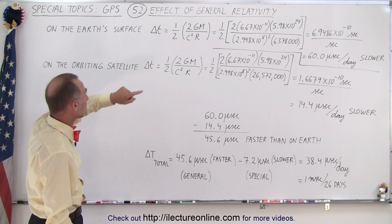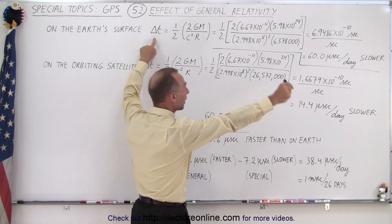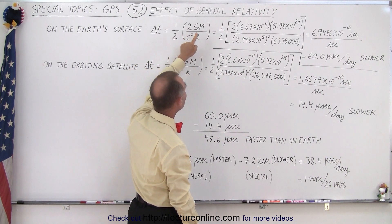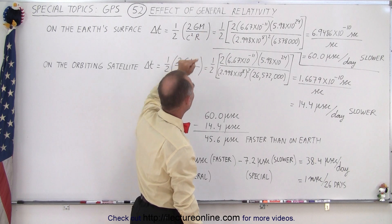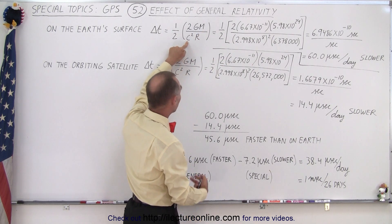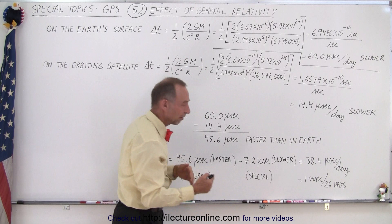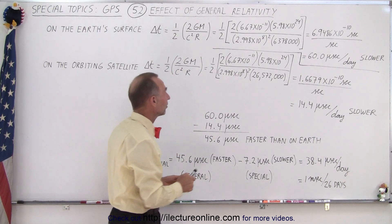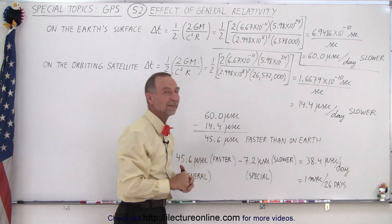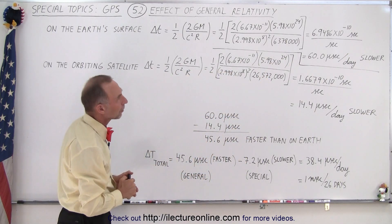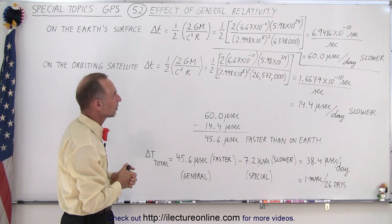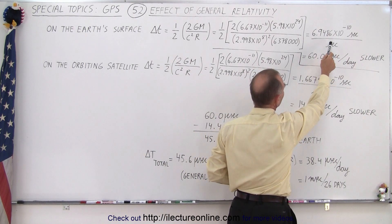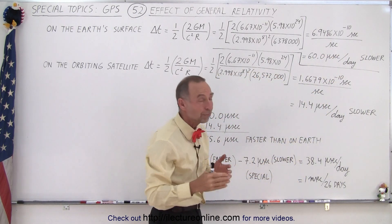And so on the Earth's surface we calculate the difference in the time between being out in space and being on the surface of the Earth. And so it's one-half times 2GM over c squared times R, where G is the gravitational constant, M is the mass of the Earth, c squared is the speed of light squared, and R is the distance from the center of the Earth to the location that we're interested in. So in this case it would be on the surface of the Earth, so it's 6,378 kilometers or 6,378,000 meters. When we calculate that we get a time difference of 6.948 times 10 to the minus 10 seconds per second.